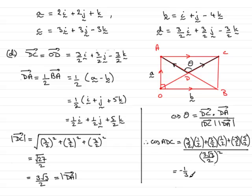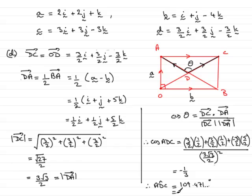So to get the angle ADC: angle ADC equals the inverse cos of minus a third, which turns out to be 109.471... degrees. Rounding to 3 significant figures or the nearest whole degree, that's 109 degrees. And that brings us to the end of this question, part D.